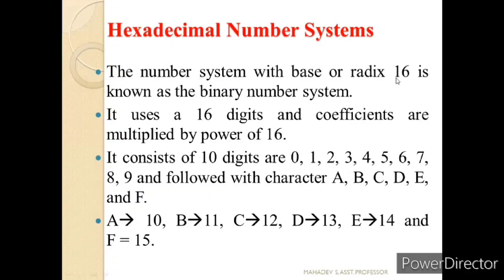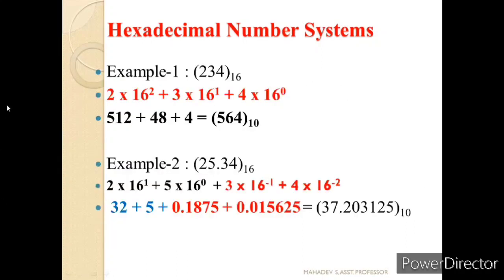Let us see an example: 234 base 16. It is represented as 4 × 16⁰, 3 × 16¹, 2 × 16². Converting: 512 + 48 + 4 = 564 in decimal. For a fractional example — 25.34 base 16: 5 × 16⁰, 2 × 16¹, 3 × 16⁻¹, and 4 × 16⁻². Converting gives 37.203125 in base 10. This is how we represent hexadecimal number systems for both integer and fractional numbers.